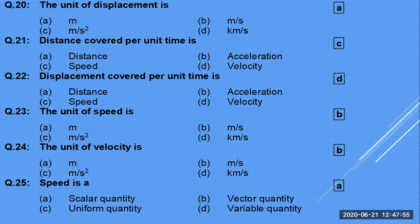Displacement and distance are both measured in meters. Do not mix them up. Distance covered per unit time is speed. Displacement covered per unit time is velocity. The rate of change of velocity is acceleration.